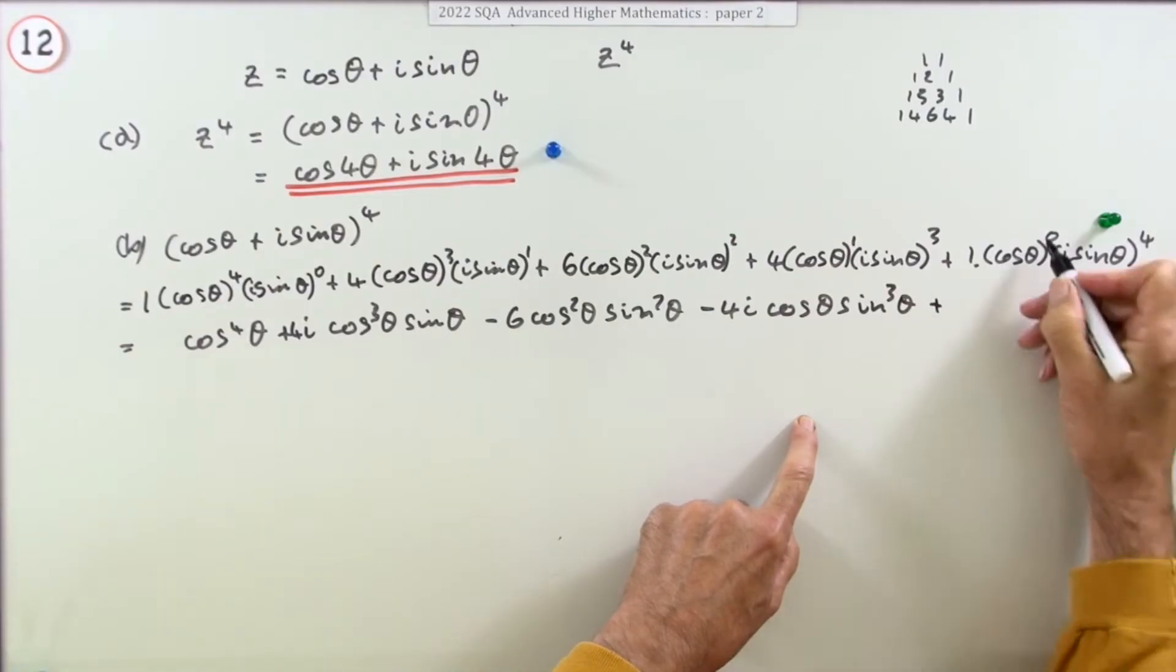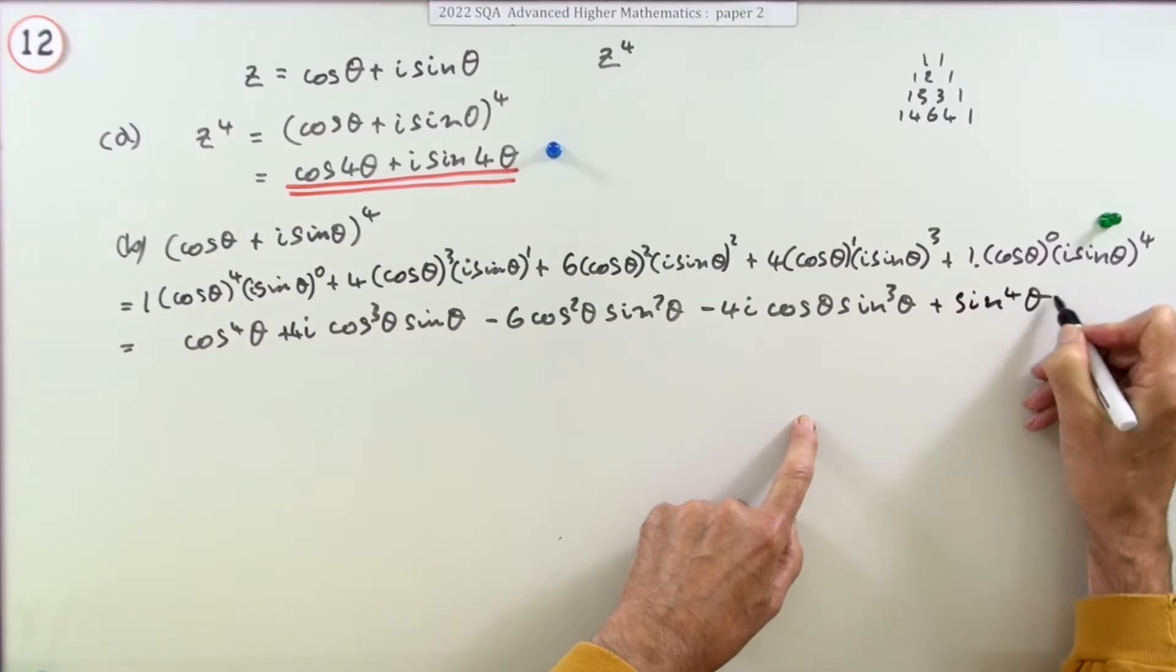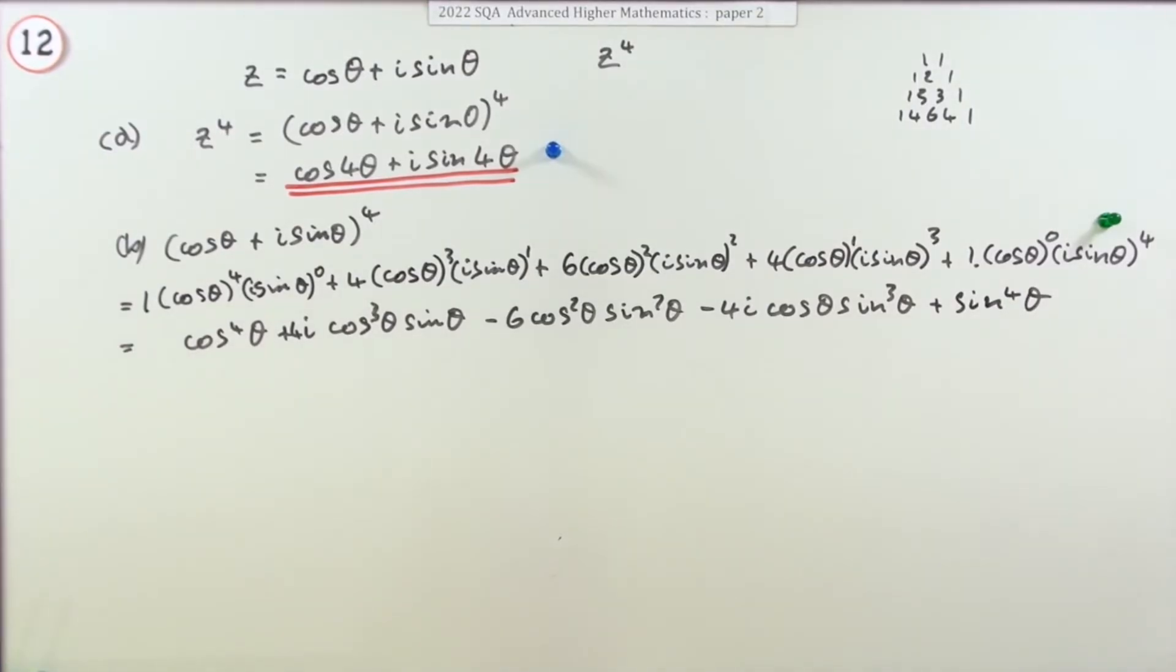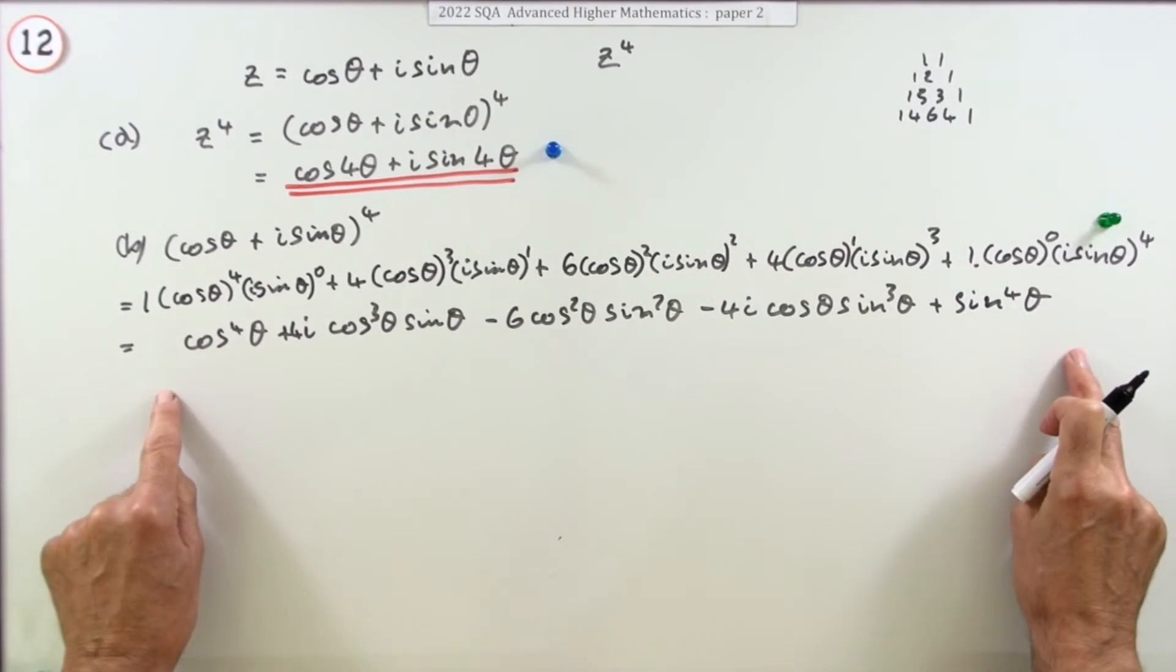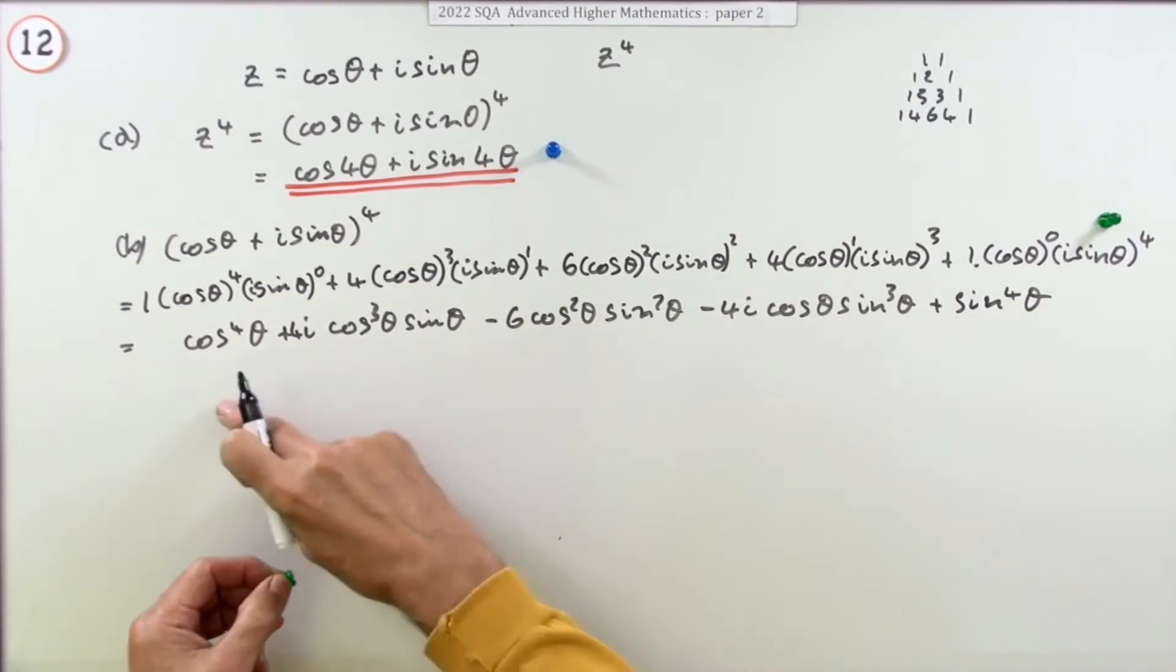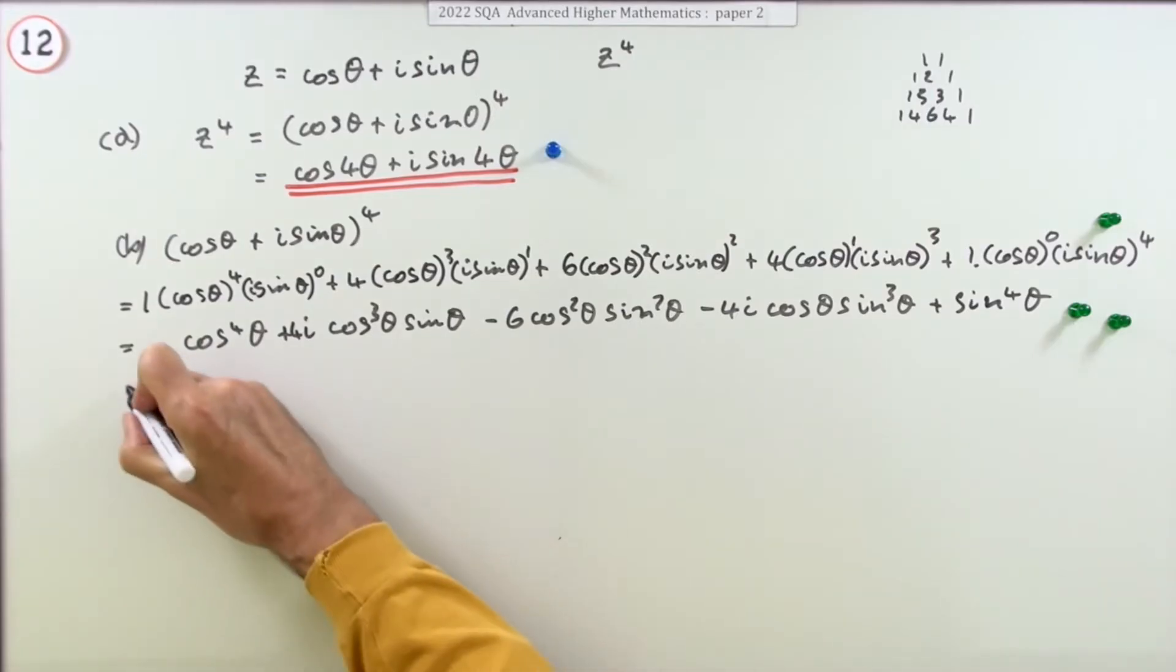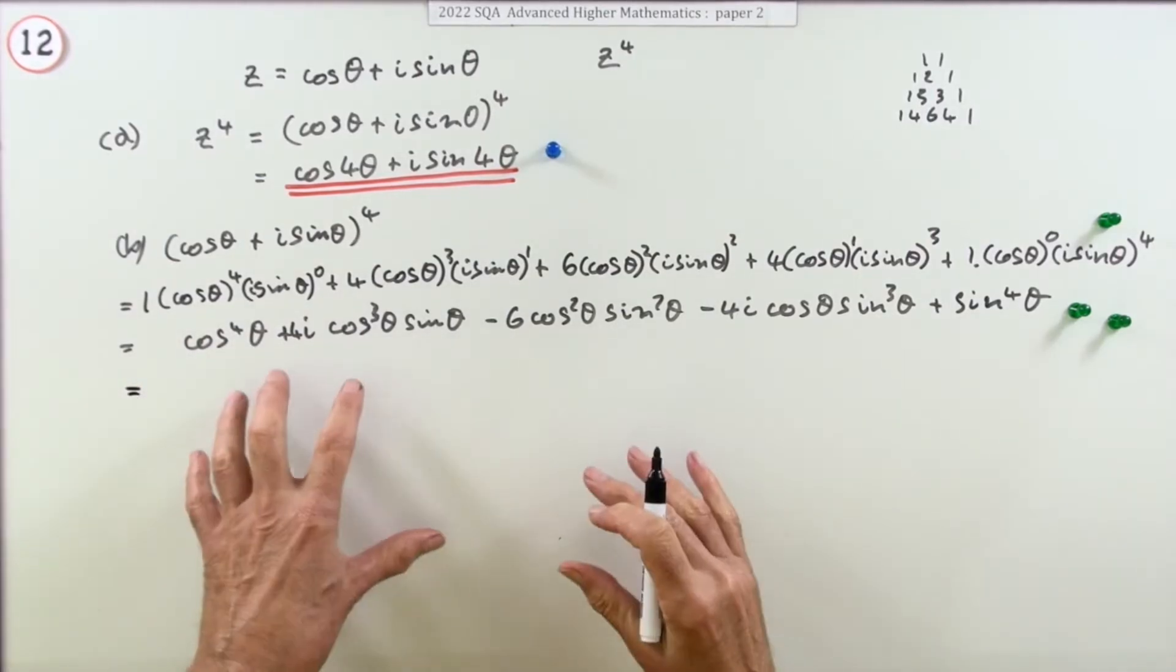Now i to the power 4 is negative 1 times negative 1 so it's back to positive, that's just 1 because it's power 0 so that'll just be plus sine to the 4 theta. Now the remaining two marks was just for getting this whole thing but they've just split it into two parts for instance have said you get one mark if you get three of them correct and you get both marks if you've got all of it correct.